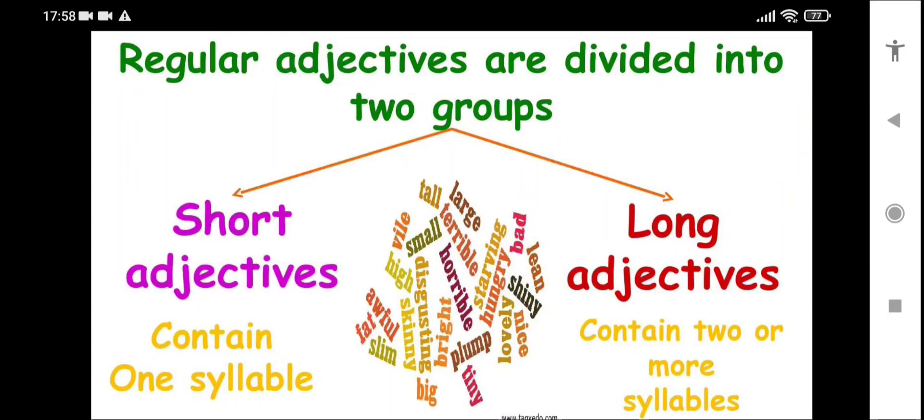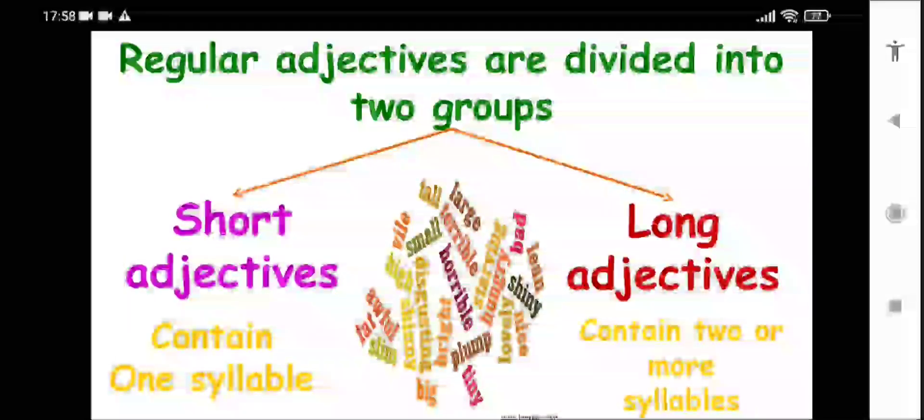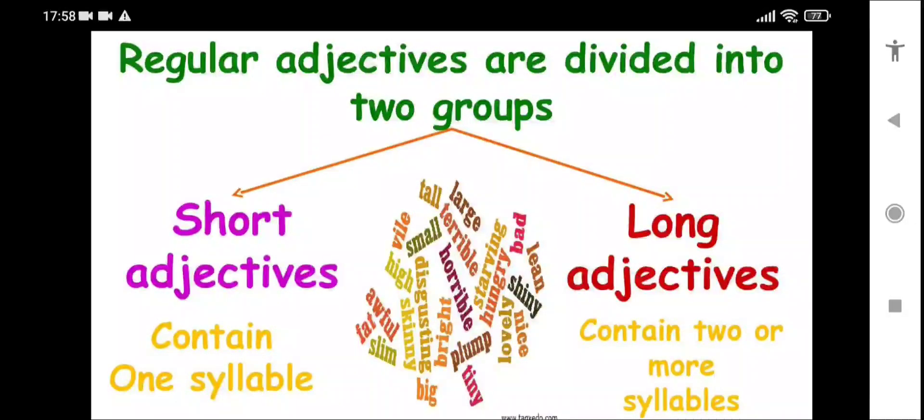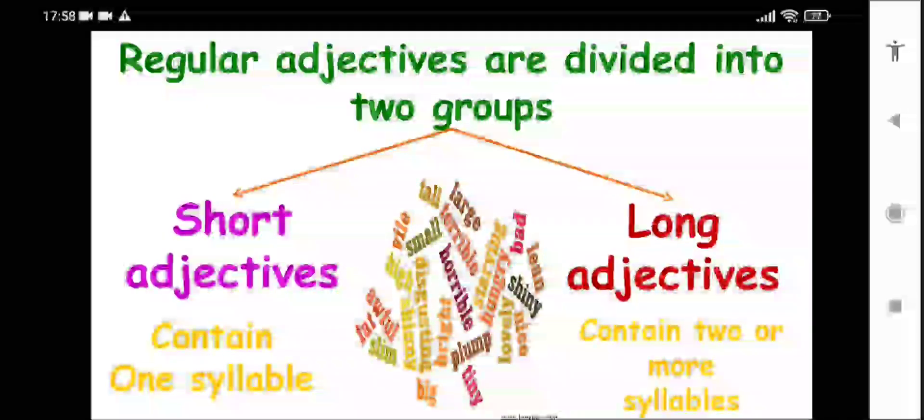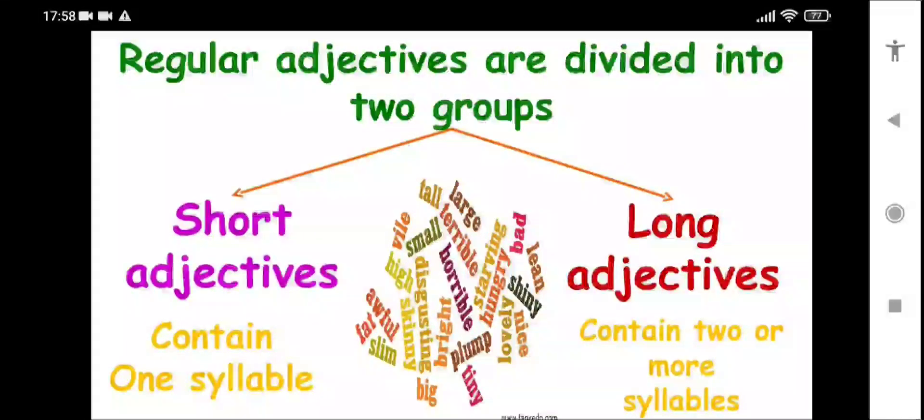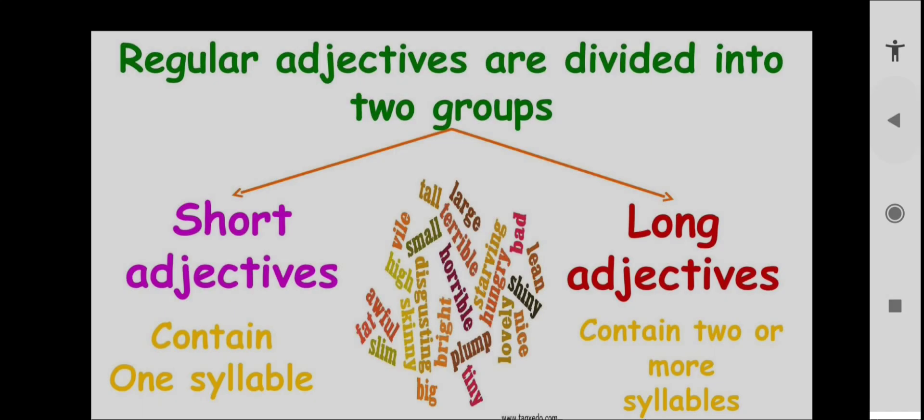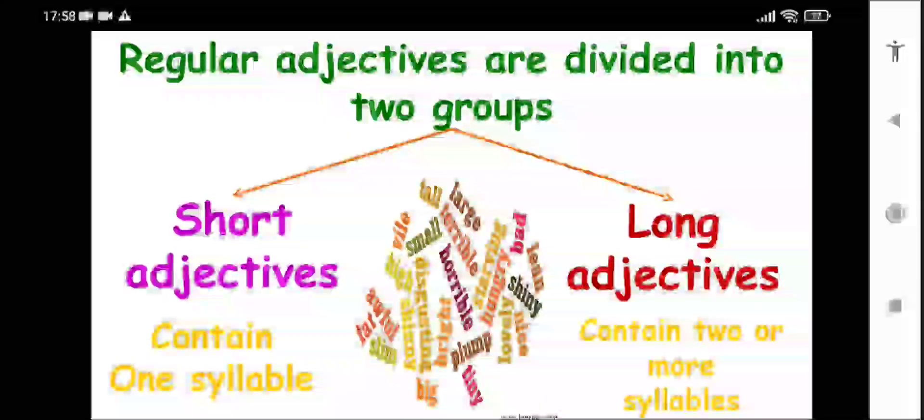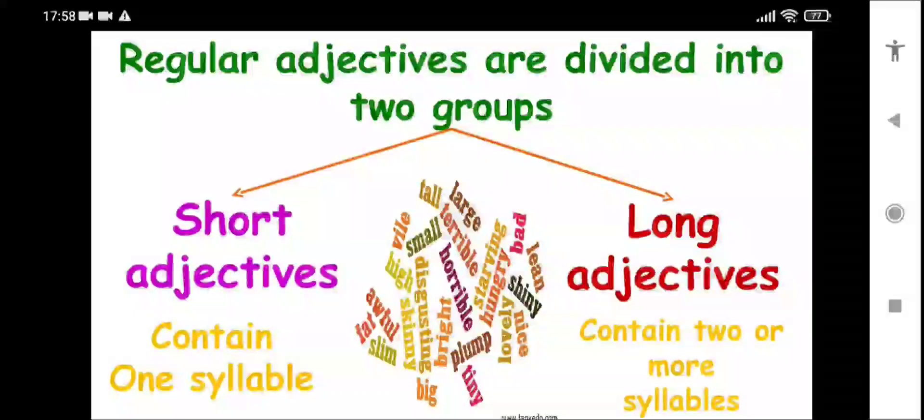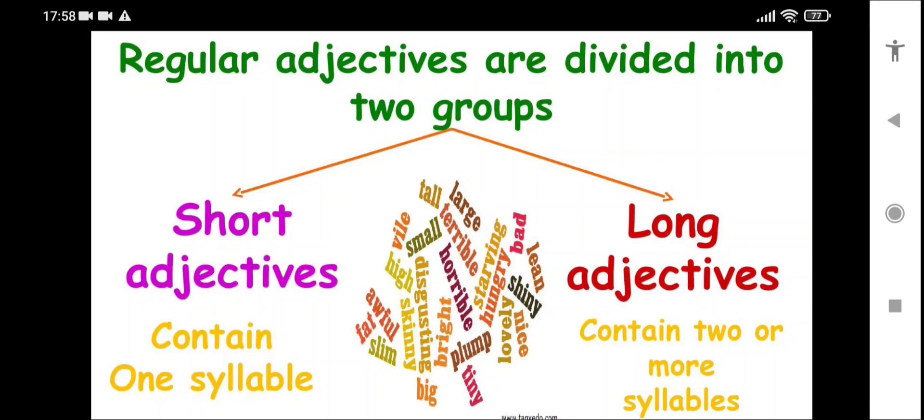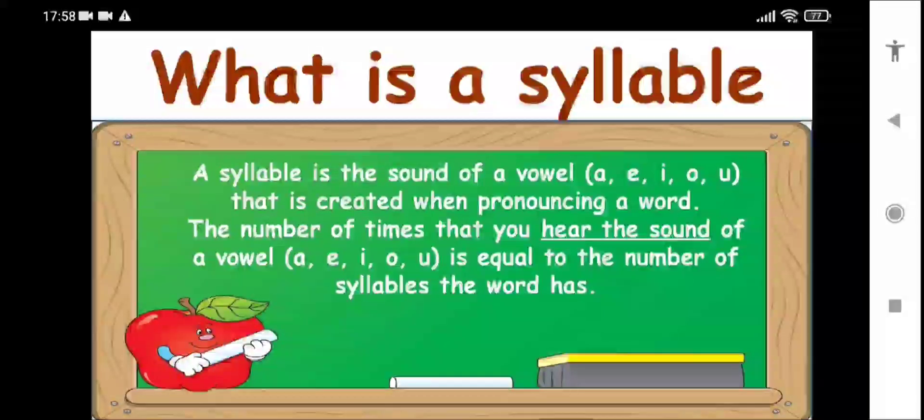A short adjective will have a vowel. Each syllable must have a vowel. And long adjectives contain two or more syllables. That means if the adjective has two syllables or more than two syllables, then the adjective is considered long. What is a syllable?